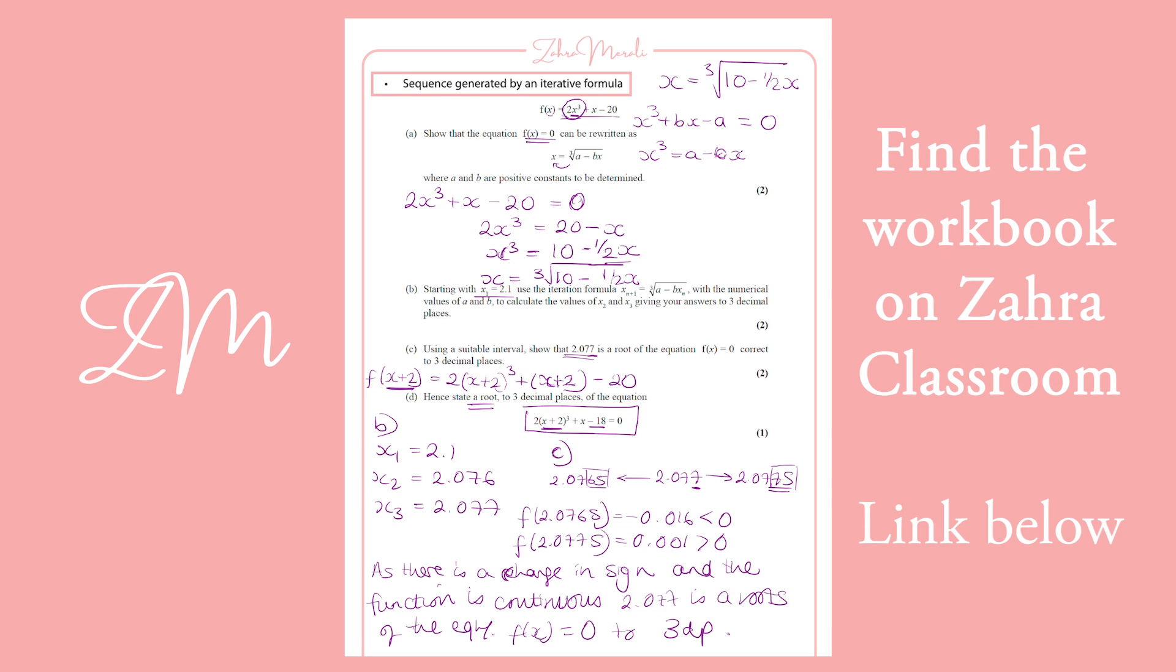Now remember, inside the bracket affects the x's. The x's are like your ex-friend, girlfriend, boyfriend, you know, whatever. They do the wrong thing. So if it says plus 2, what's happening to the coordinate, it's moving minus 2.